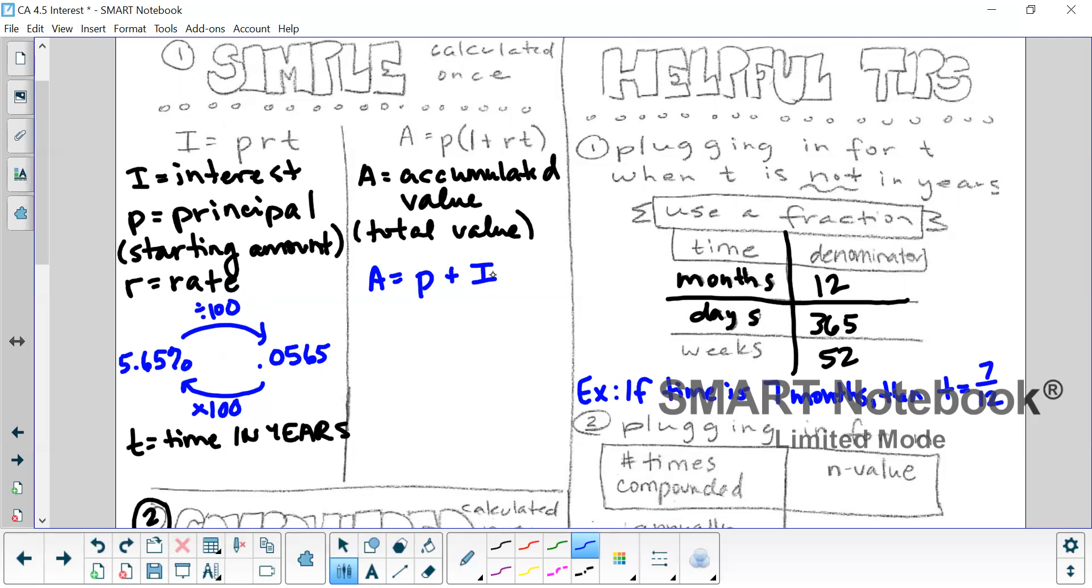And I want to show you how this formula that I just wrote down is the same as the original one of P times one plus RT. So if you notice the I, we already have this formula for I, I equals PRT. So I can replace that I with PRT. And then there's a GCF of P in both of those terms. So I'm going to divide that out. In the first term, when you do P divided by itself, you're left with one. And in the second term, after dividing out P, you're left with RT. And there's our formula.